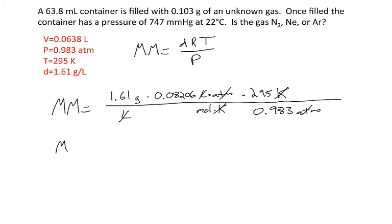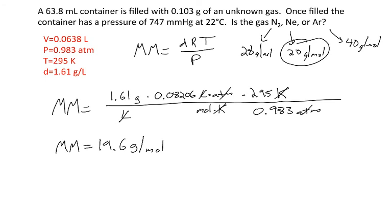I get a molar mass equal to 19.6 grams per mole. And so now I would compare that to the molar masses for my three gases. So nitrogen, that's two times 14, that's 28 grams per mole. Neon is about 20 grams per mole. And argon is 40 grams per mole. So whichever one is closest - it looks like my unknown gas is neon.